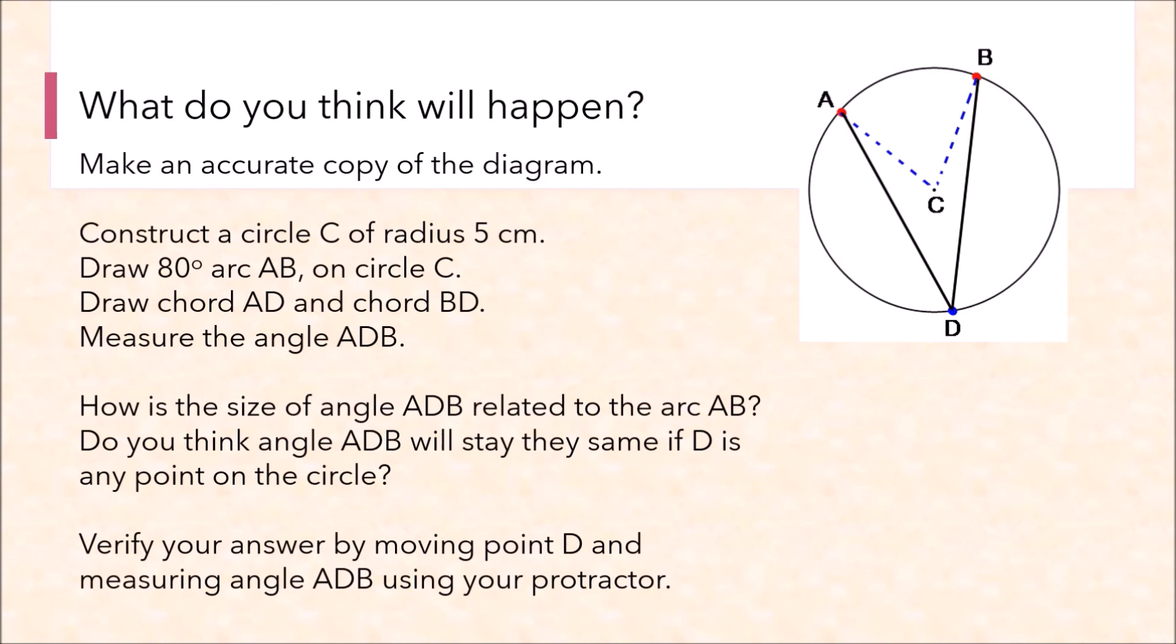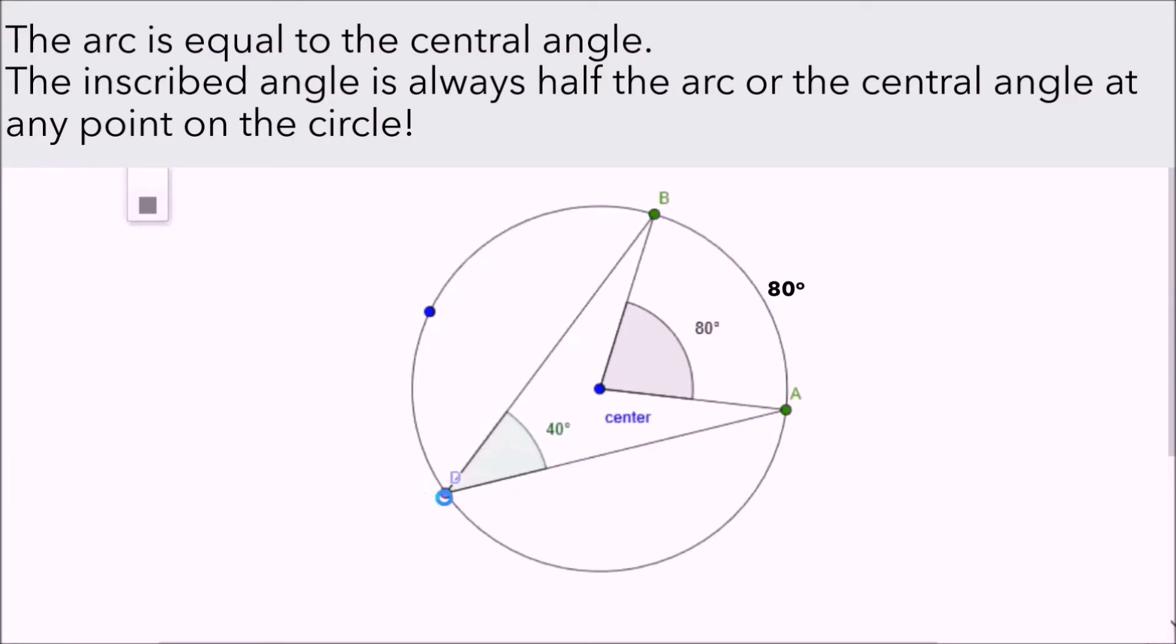So what did you discover? Let's take a look at the illustration to see what happens. You should have this diagram. If the central angle is 80, the arc is also 80. Now look at the inscribed angle D, it is 40, which is half of the central angle. Let's see what happens when we move the D. As we move D on the circumference, the major arc of the circle, 40 stays the same. So the inscribed angle is always half the central angle, or it's always half the arc.